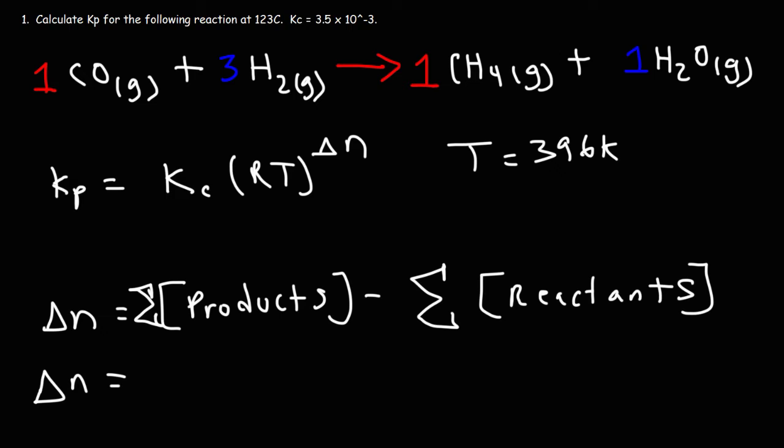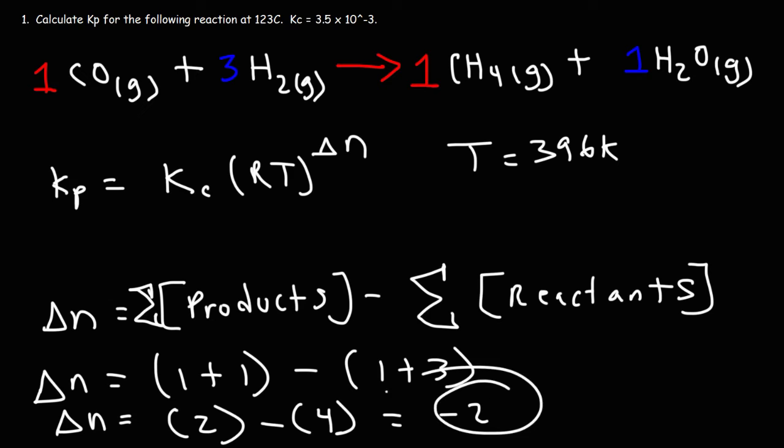Now, the sum of the coefficients of the products, it's going to be 1 plus 1. The sum of the coefficients of the reactants is 1 plus 3. And everything is in its gaseous state, so we can use all of it. 1 plus 1 is 2. 1 plus 3 is 4. So this is 2 minus 4, which is equal to negative 2. So delta N is negative 2 in this example problem.